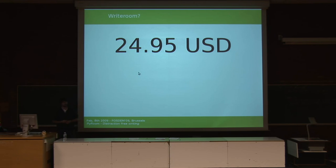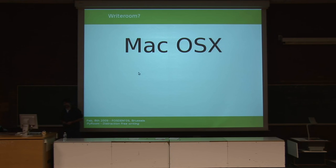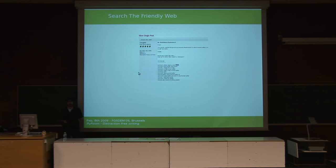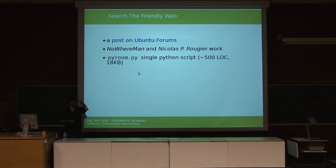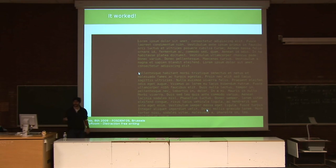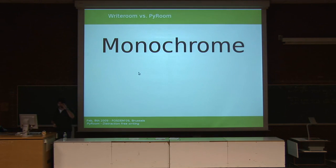White Room costs $24.95 US dollars and it only works on Mac. I wanted to have it on Linux, so I thought a full-screen text editor must already exist. I searched the web and stumbled upon a post on the Ubuntu forums where a man named Nicolas Perugier had written a pyroom.py — a single Python script, 500 lines of code, only 18 kilobytes including comments, that just worked. It was a full-screen text editor.